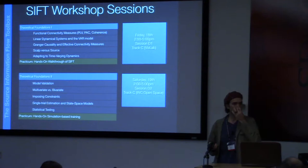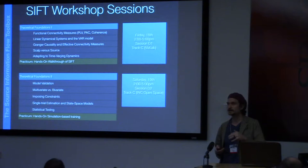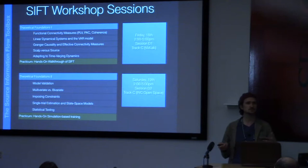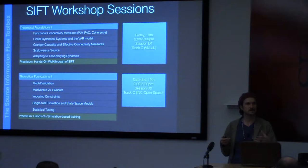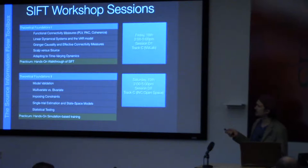Today we'll cover the theoretical foundations for modeling functional and effective connectivity in the brain using contemporary and legacy techniques. That includes functional connectivity measures like phase locking value, phase amplitude coupling, and coherence. We'll then move on to linear dynamical systems and the vector autoregressive model — the theory behind it, how it works, and how you fit these kinds of models.